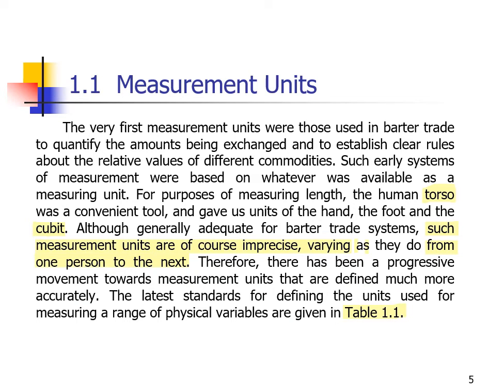The human hand gave us a unit — which we initially called a span — later used as the foot and the cubit. Although generally adequate for barter systems, such measurement units are, of course, imprecise, varying as they do from one person to the next.